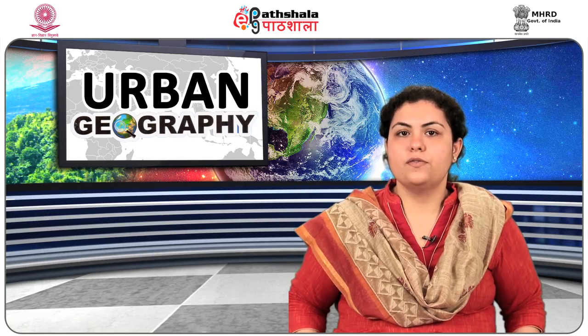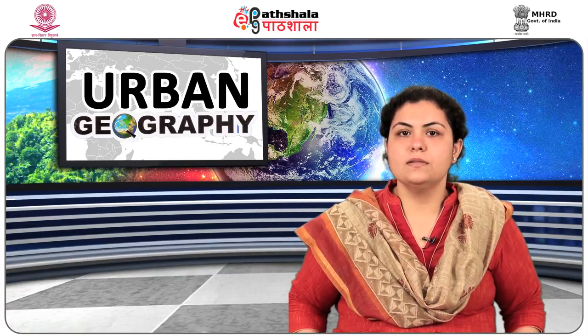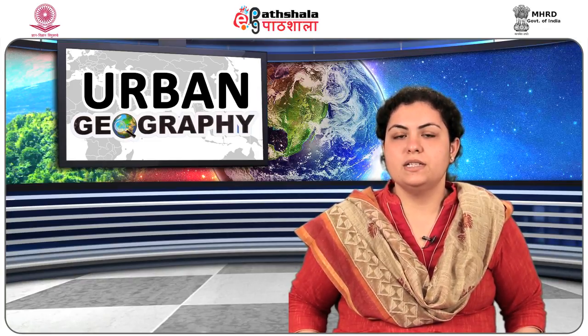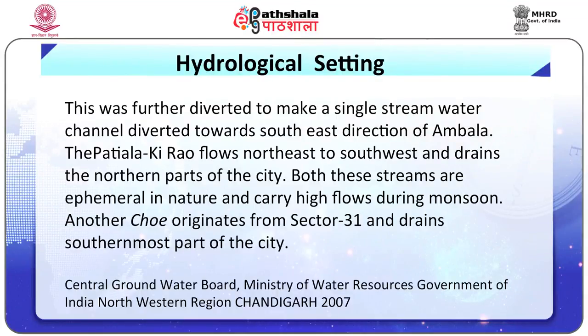The Sukhna Ko flows from north to south to drain the eastern part and joins the Ghaggar river. This ko has been dammed in the north-eastern periphery of the city to create the largest man-made lake in India, known as the Sukhna Lake, with a water holding capacity of 5 million cubic metres. It was further diverted as a single stream water channel towards the south-east direction of Ambala. The Patiala Ki Rao flows north-east to south-west and drains the northern part of the city. Both these streams are ephemeral in nature and carry high flows during monsoon. Another ko originating from sector 31 drains the southernmost parts of the city.